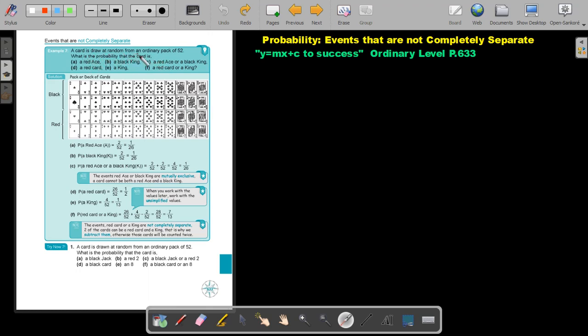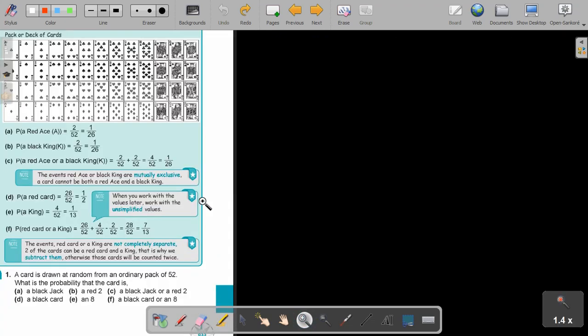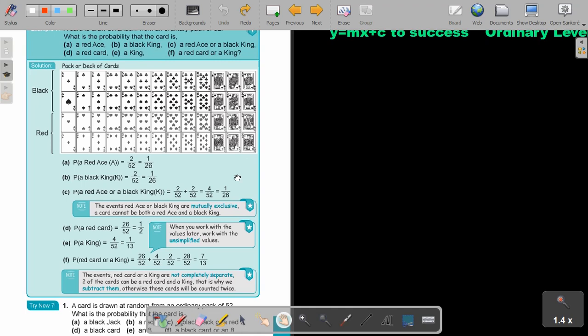A card is drawn at random from an ordinary pack of 52 cards. What is the probability that the card is a red ace, a black king, a red ace or a black king, a red card, a king, a red card or a king? Remember this is black and this one is red. Let's mark it on the picture. If I look at the red ace, this is red. Can you see that there is a red ace and there is a red ace? So the probability of red ace will be 2 out of 52, and you can simplify it to 1 over 26.